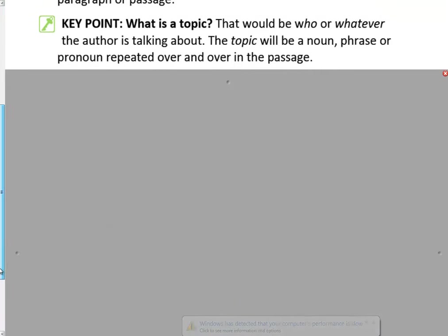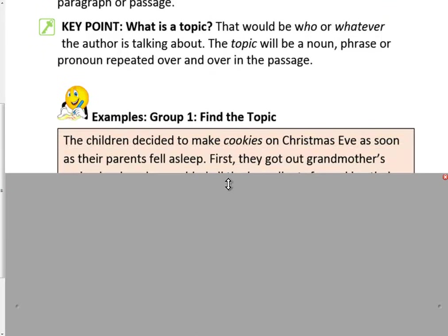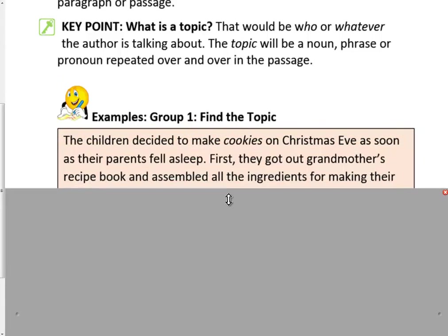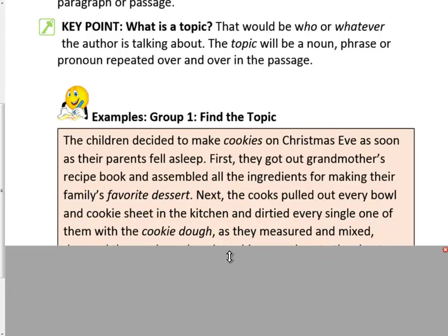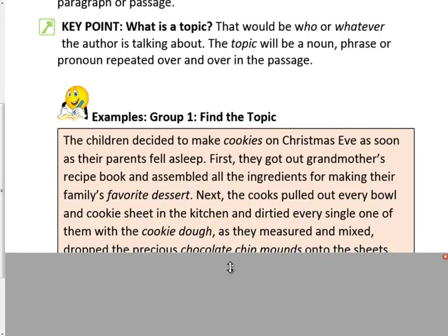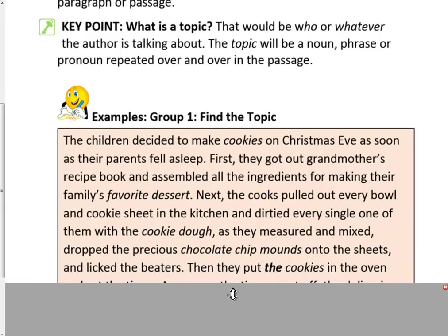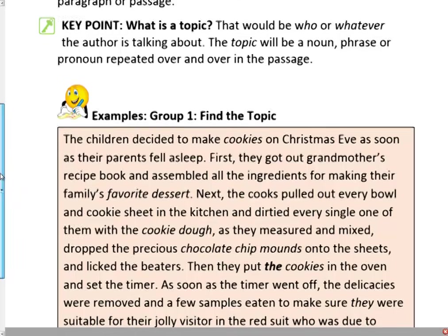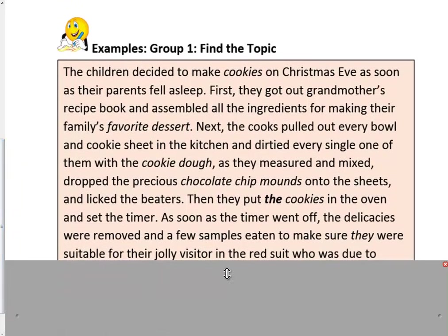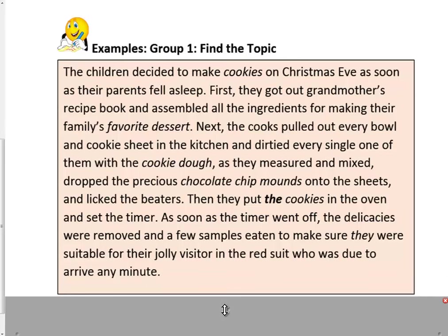We're going to take a look at an example of a topic. The children decided to make cookies on Christmas Eve as soon as their parents fell asleep. First, they got out grandmother's recipe book and assembled all the ingredients for making their family's favorite dessert. Next, the cooks pulled out every bowl and cookie sheet in the kitchen and dirtied every single one of them with cookie dough. As they measured and mixed, they dropped the precious chocolate chip mounds onto the sheets and licked the beaters. Then they put the cookies in the oven and set the timer. As soon as the timer went off, the delicacies were removed and a few samples eaten just to make sure they were suitable for their jolly visitor in the red suit who was due to arrive any minute.